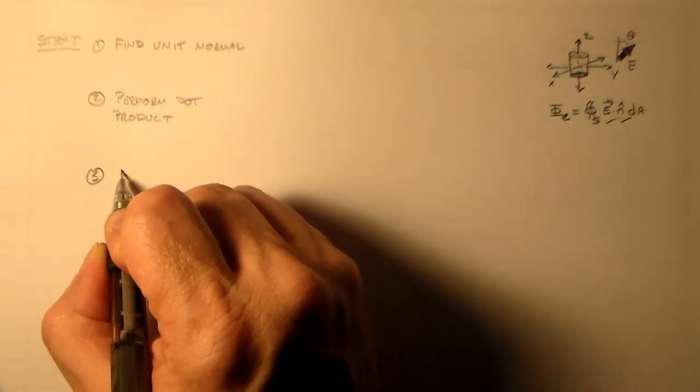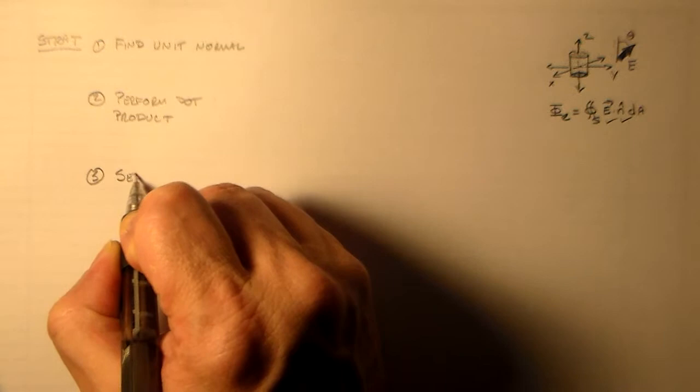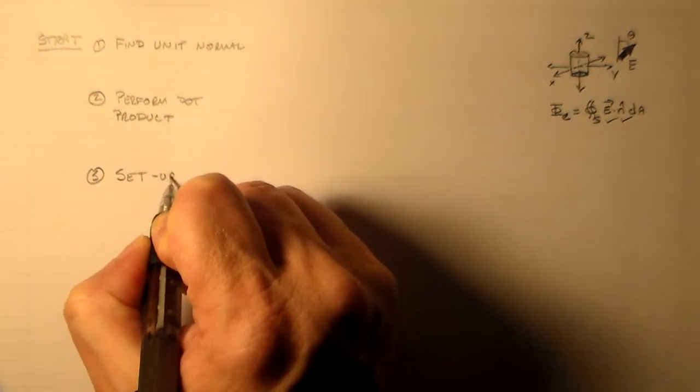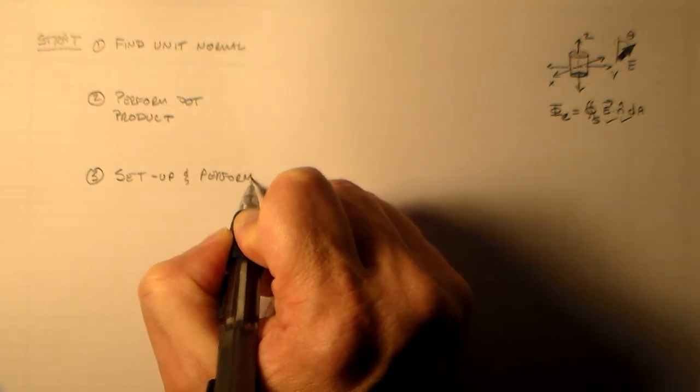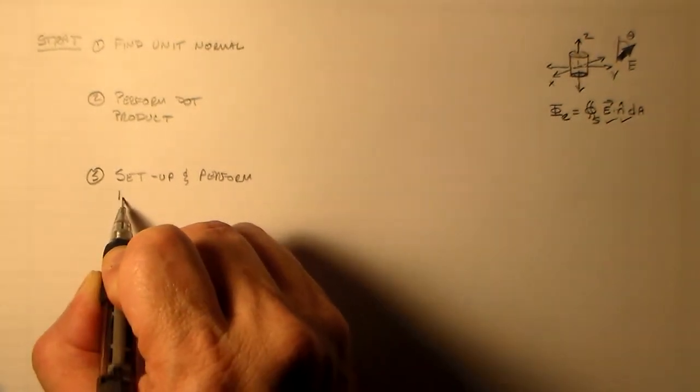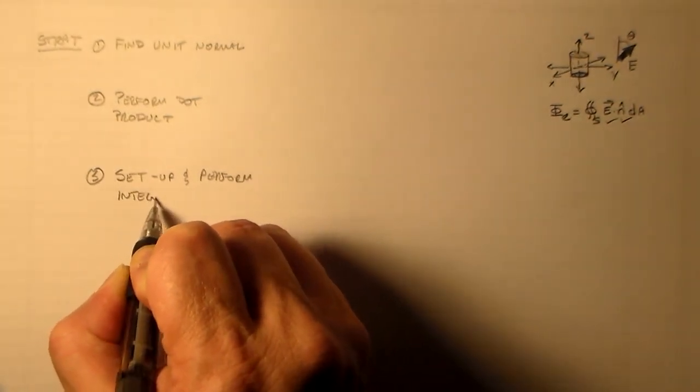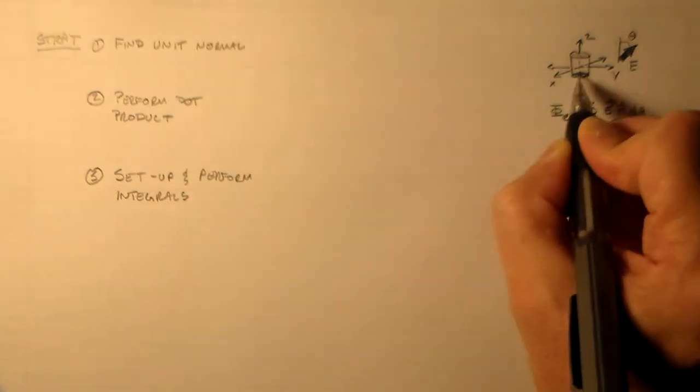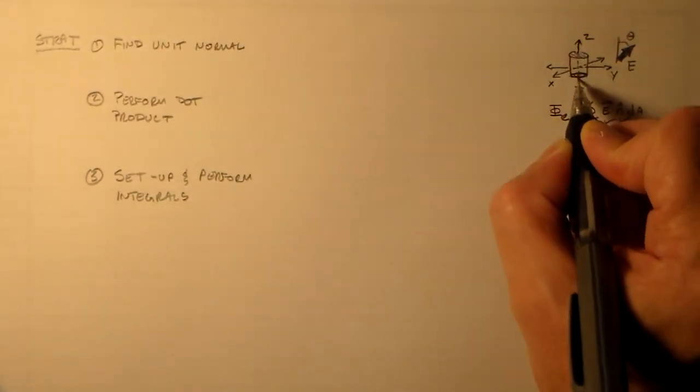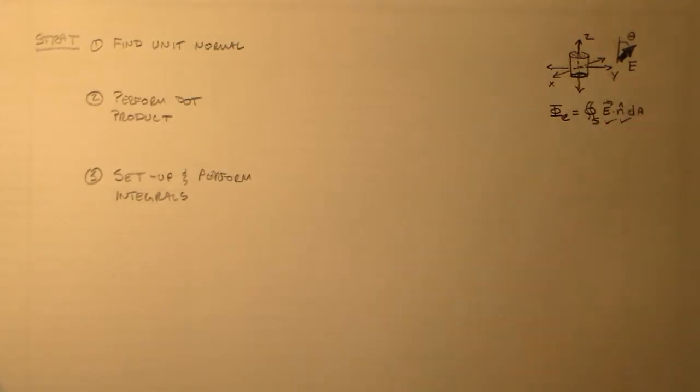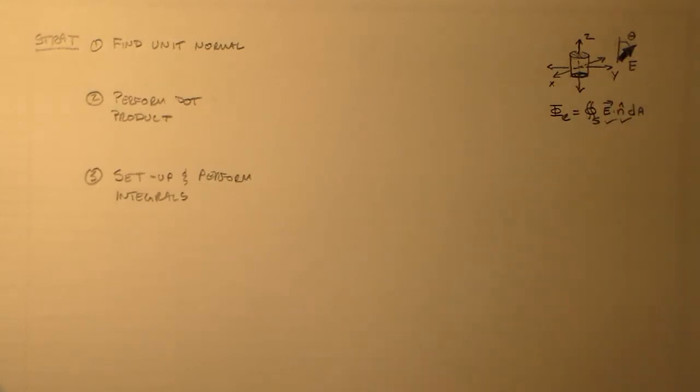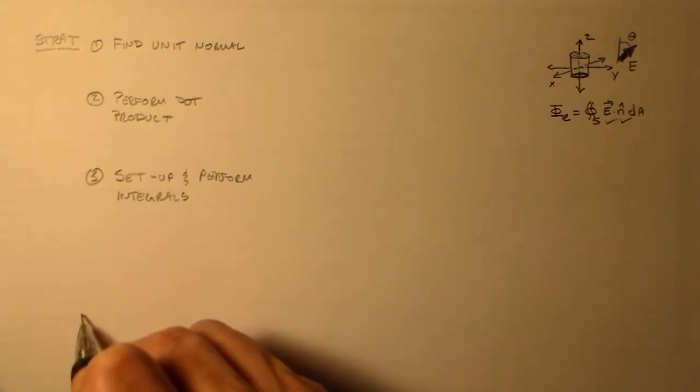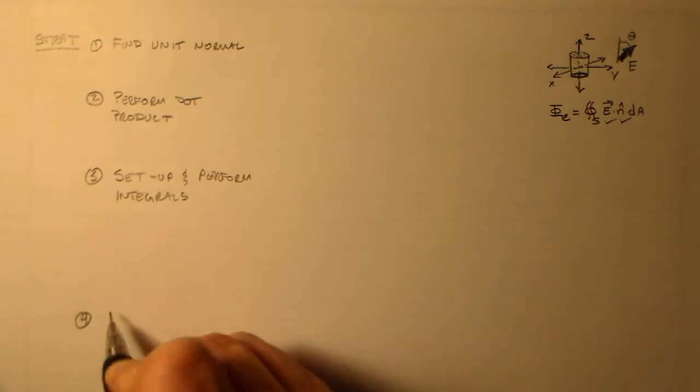So we'll write down a few of those things. Then we'll have to set up and perform integrals for each part. So each part of this, the top, the bottom, and the side. Each one has to have the integral done individually. And then somewhere down here we'll add them all up.